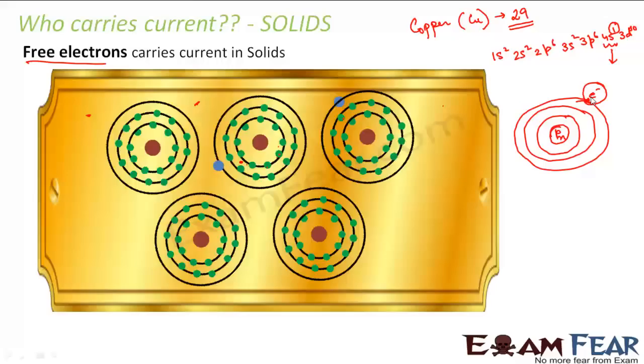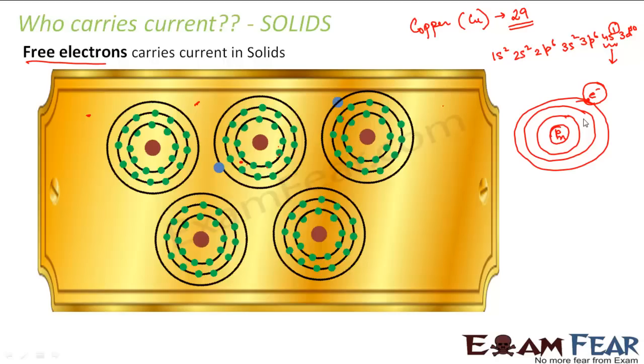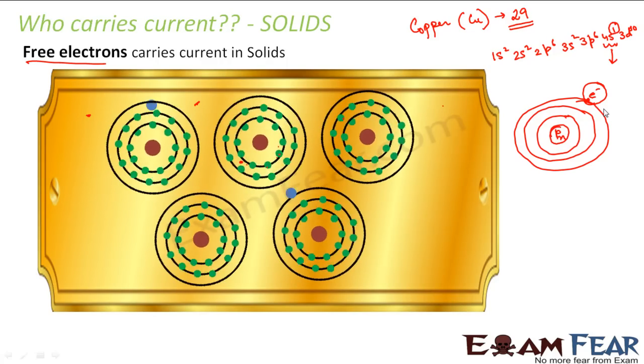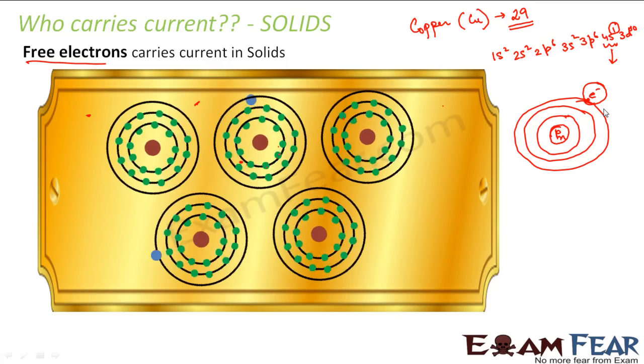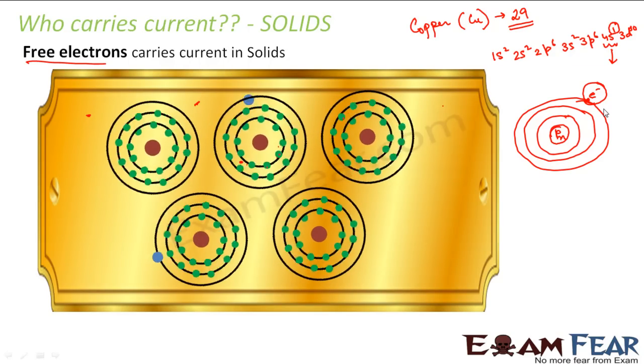So this electron which is there in the outermost shell is the one which is most loosely bound to the nucleus. Obviously this is quite true - as you go away from this nucleus, your bond with the nucleus will decrease. Like for example, as you go away from your friend, the bond between you and your friend will decrease, right? And as you both come closer, the bond between you both will increase. So similar is the case here.